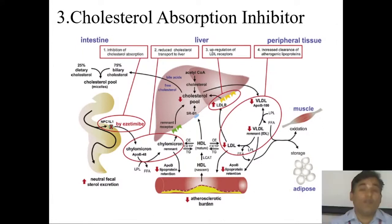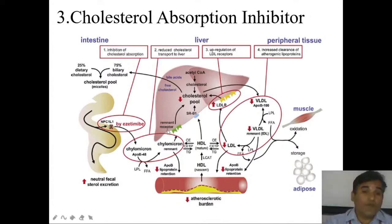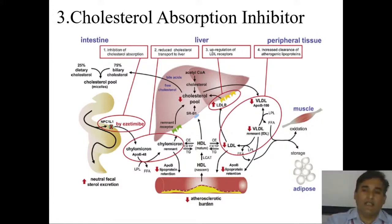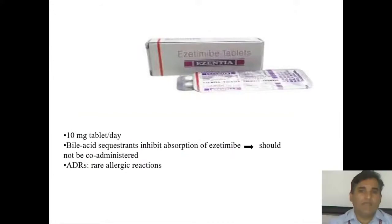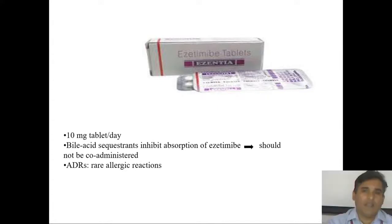Cholesterol absorption inhibitor: ezetimibe inhibits absorption of cholesterol from the GIT to systemic circulation. When cholesterol absorption from GIT decreases, cholesterol transport to the liver via chylomicron decreases. When cholesterol levels in plasma decrease, there is feedback upregulation of the LDL receptor. When the LDL receptor is upregulated, LDL-mediated cholesterol transport increases and plasma LDL decreases. Ezetimibe is available as 10 mg tablets. Note: bile acid sequestrants inhibit absorption, so should not be combined with ezetimibe. Some patients may have an allergic reaction.